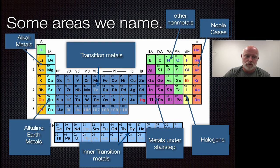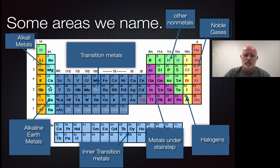All of the metals in group one are called alkaline metals, except for hydrogen. In group two, we call them alkaline earth metals.